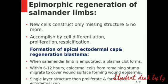How does it form? Through the Apical Ectodermal Cap (AEC). When the salamander limb is amputated, a plasma clot is formed within 6 to 12 hours. After that, the epidermal cells will cover the wound surface. There will be a single layer of epidermis, which will proliferate to form our Apical Ectodermal Cap.